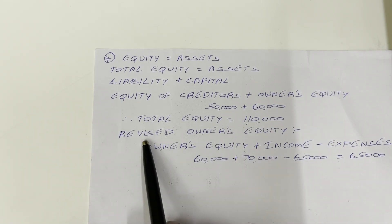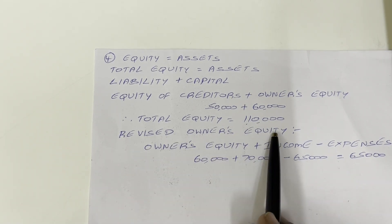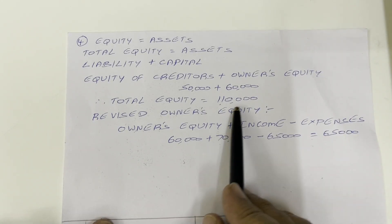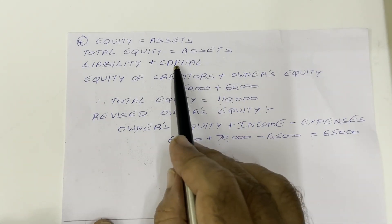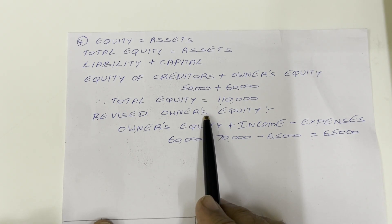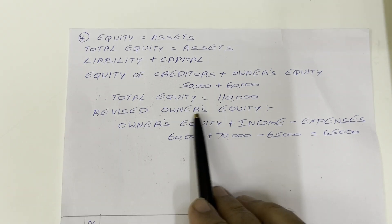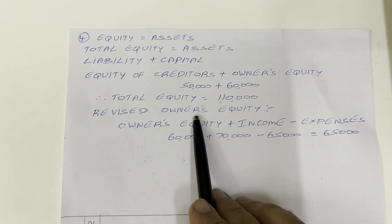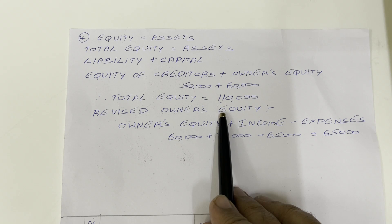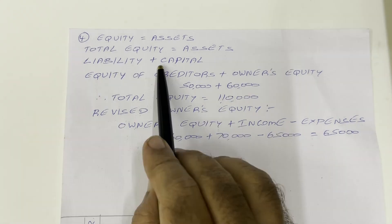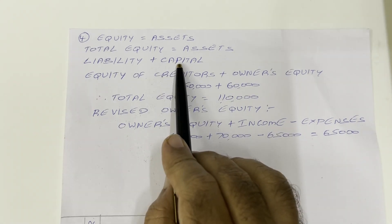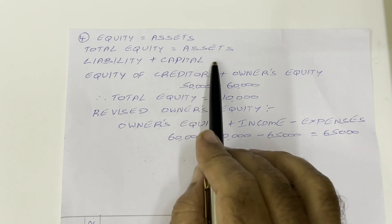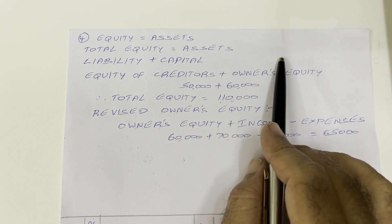For the second question, he is asking for revised owner's equity. Owner's equity means capital. So he is asking for revised capital. In previous videos, I have explained about the extended accounting equation. There I said capital in extended form is: capital plus income minus expenditure.